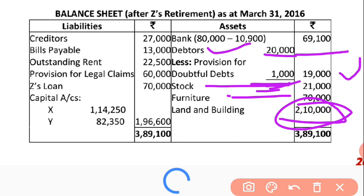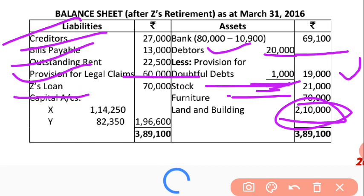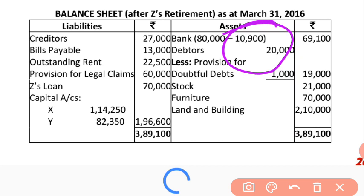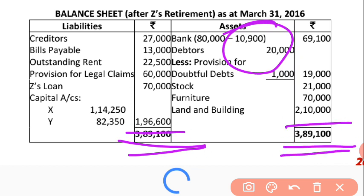On the liability side: creditors 2,700 — no change; bills payable 13,000 as before; outstanding rent as before; provision for legal claims is now 60,000. A new item is Z Loan Account 70,000 from the capital account transfer. Capitals of X and Y are 1,14,250 and 82,350. The bank payment of 10,900 is subtracted and the total of both sides is 3,89,100.